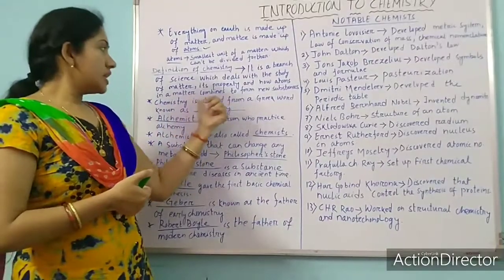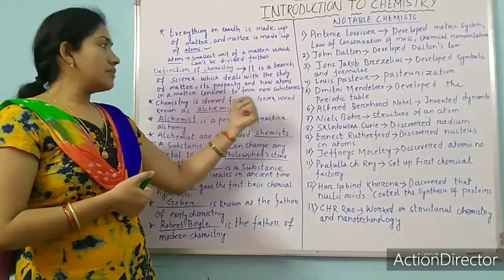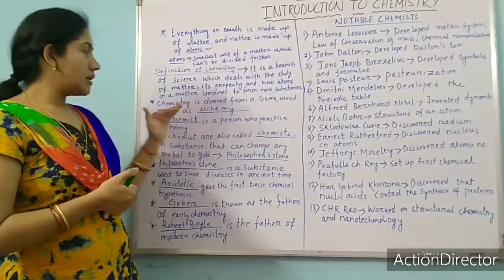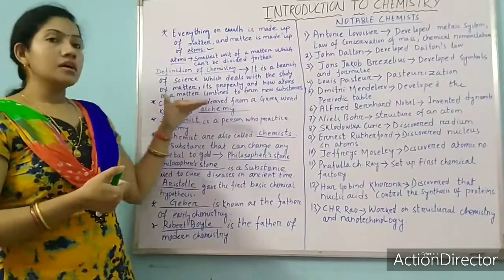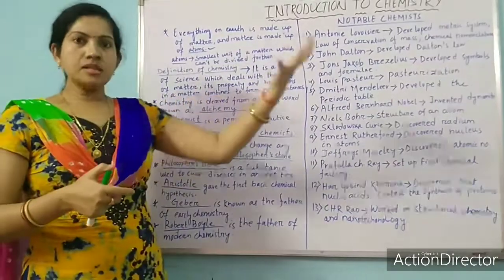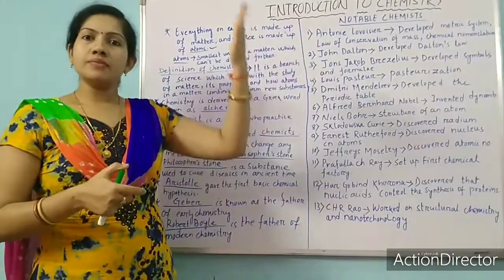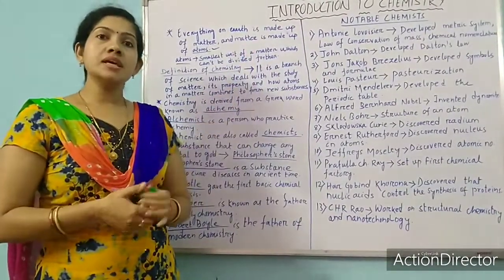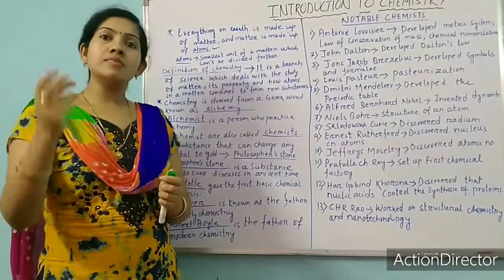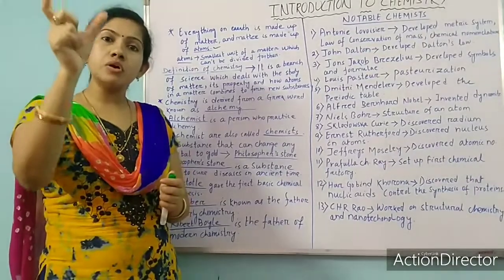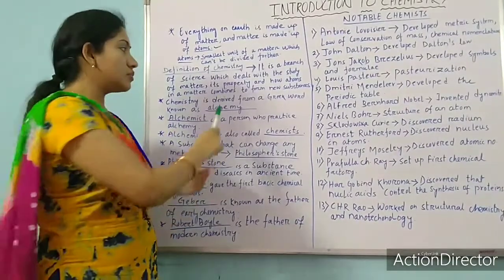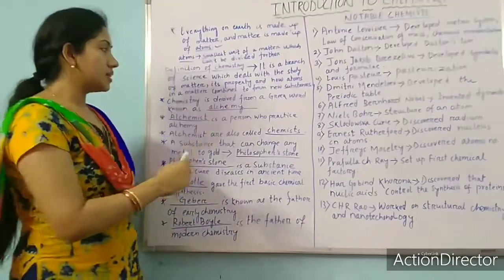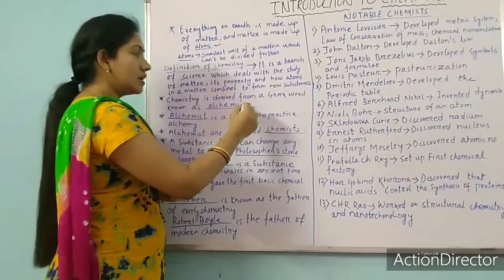Now, chemistry is derived from a Greek word. In ancient times, the word is Alchemy. Here I have written — you can see — chemistry is derived from a Greek word, and that word is Alchemy.